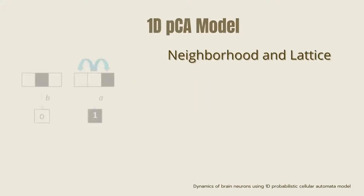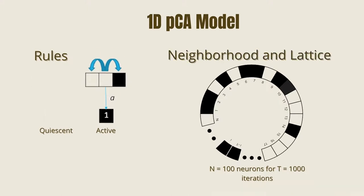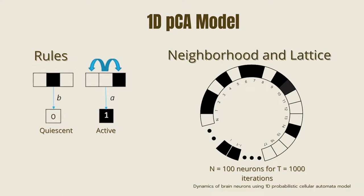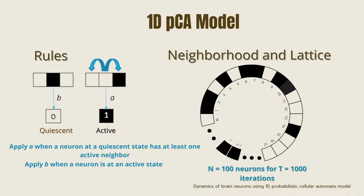Our 1D PCA model uses a set of rules based on the probabilistic parameters A and B, which may result in either an active or quiescent state on the next iteration. We simulate our PCA to 100 neurons over several iterations while using a circular neighborhood.